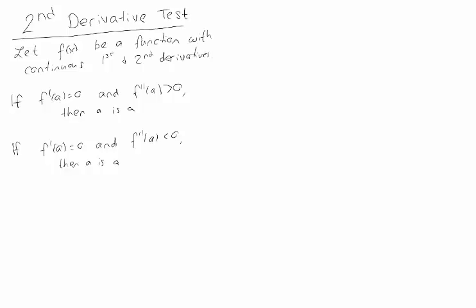Suppose f'(a) equals 0 and f''(a) is positive. If f''(a) is positive, remember our mnemonic, that means we're concave up. So a would be somewhere in a concave up region, and if the derivative is 0, that means we're at this critical point, and we can see that this is a local minimum.